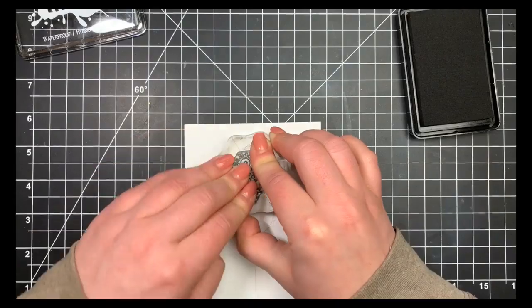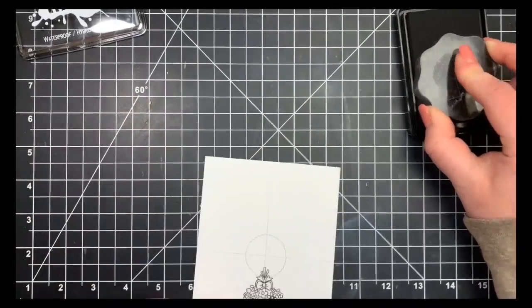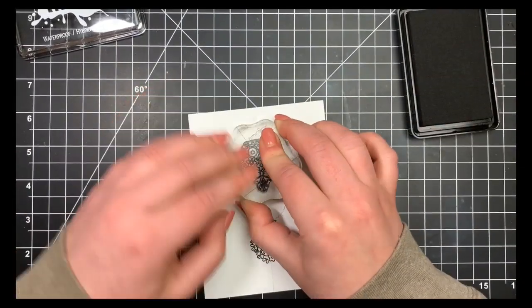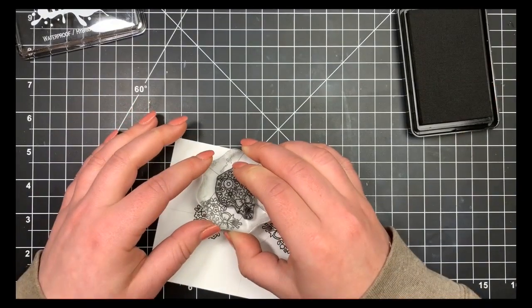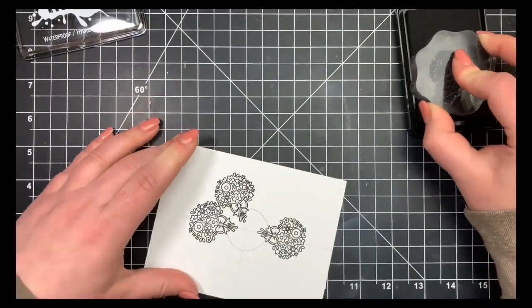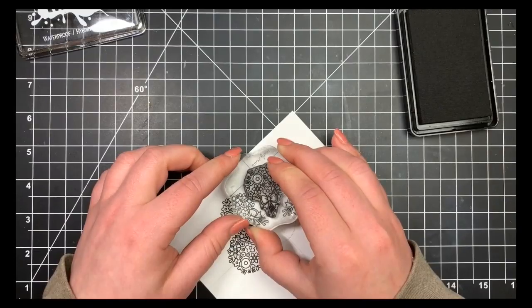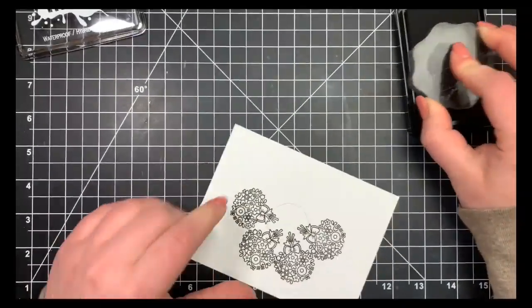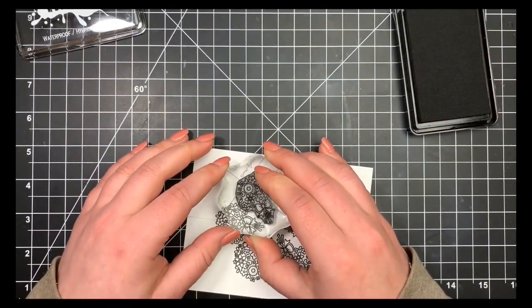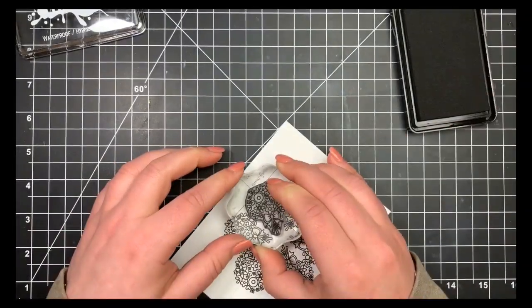I'm using Blackout ink by Ink On 3 because it's a Copic-safe ink. I'm starting by stamping one on the top, one on the bottom, and then filling in two on either side to make a circle of this image. I'm using those pencil lines I've drawn out as my guide.